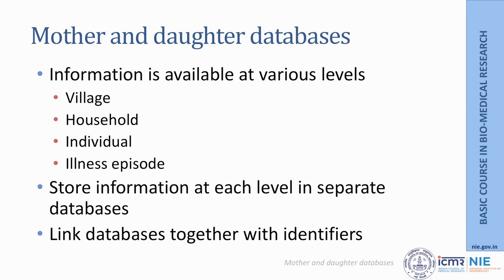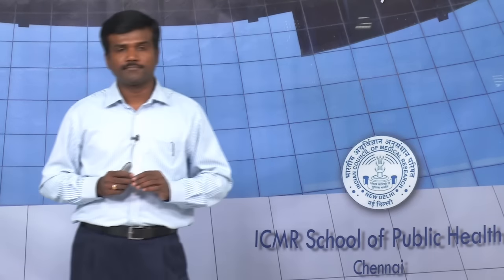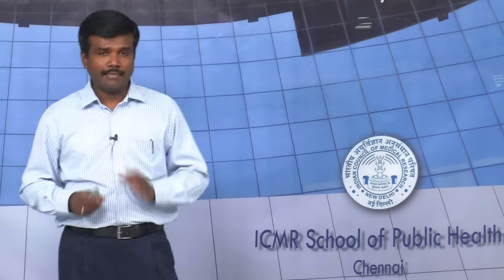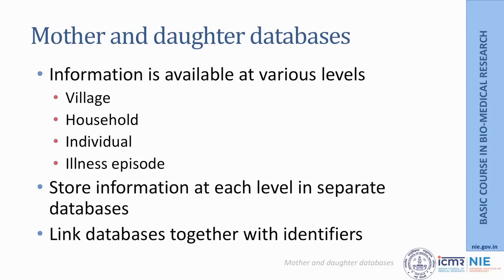There can be instances where you have what is called a mother and daughter database. You may collect information at various levels — at the village level, at the household level, at the individual level, and within an individual about several episodes of illness using different questionnaires. You may have information about different levels, but you do not repeat information at all levels for one individual. For example, you keep household information at the household level and village information at the village level. At the time of data analysis, you can link the village database with the household database, and link the household database to the individual database, so that you can sensibly analyze without confusion.